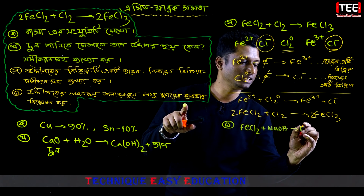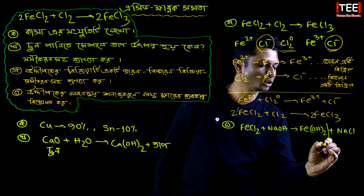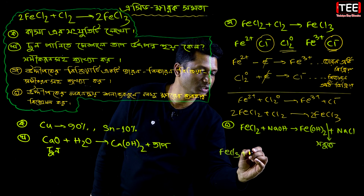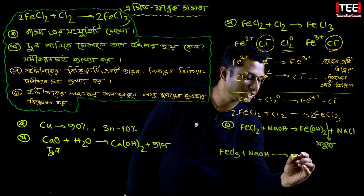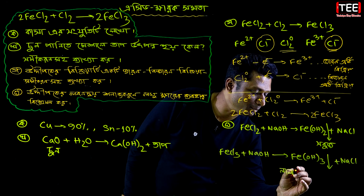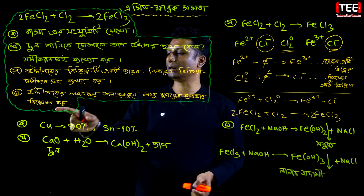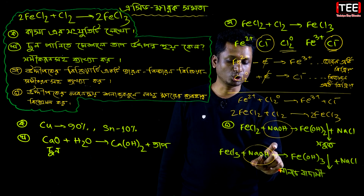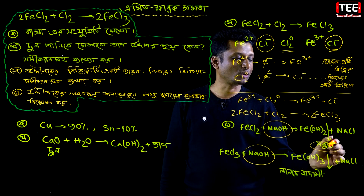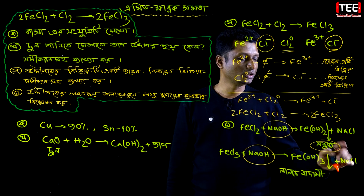I am looking at sodium hydroxide. With ferrous chloride and sodium hydroxide, ferrous hydroxide is produced, which gives a red-brown precipitate. Then with further reaction, ferric hydroxide gives a red-brown precipitate and sodium chloride is produced.